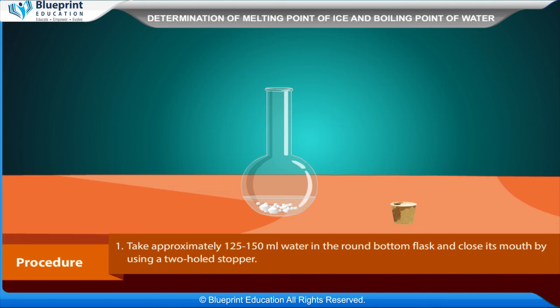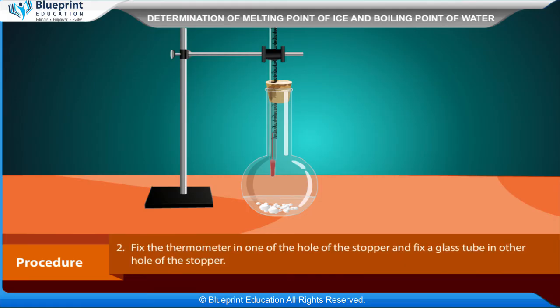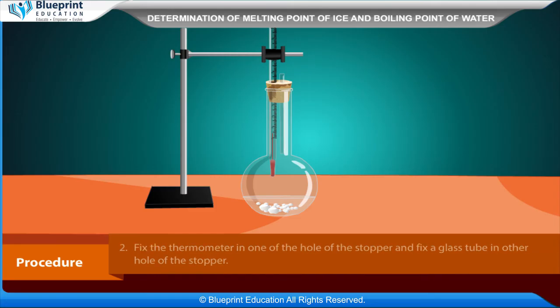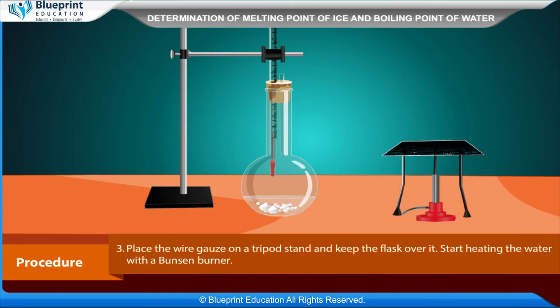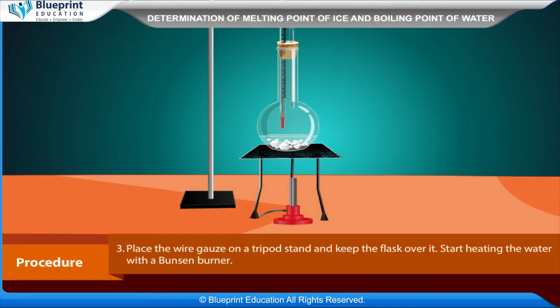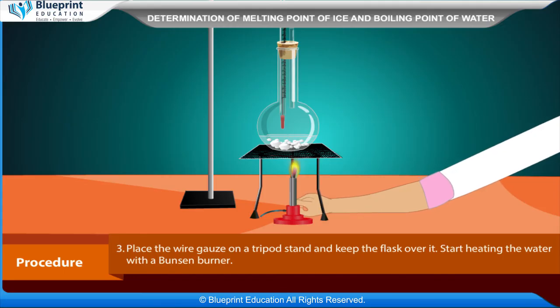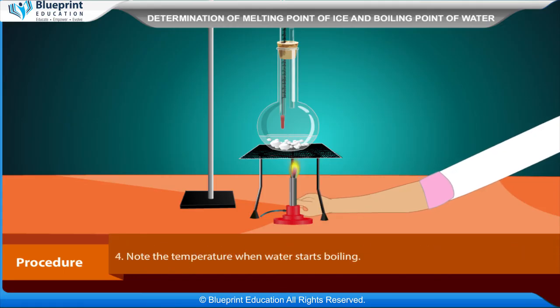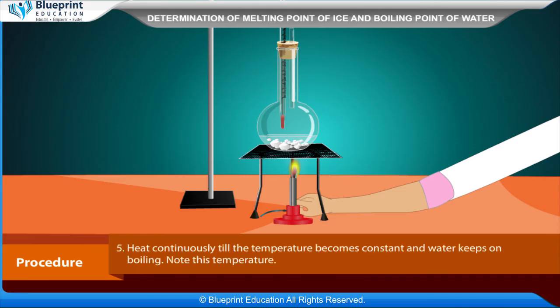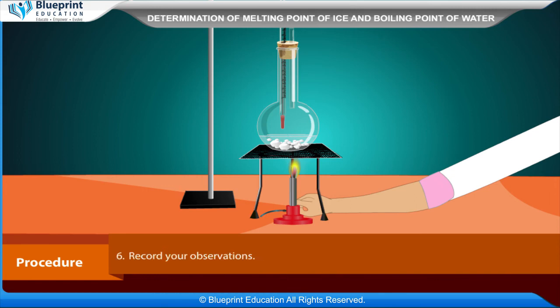Procedure: Take approximately 125 to 150 ml of water in the round-bottomed flask and close its mouth using a two-hole stopper. Fix a thermometer in one hole of the stopper and a glass tube in the other hole. Place the wire gauze on a tripod stand and keep the flask over it. Start heating the water with the Bunsen burner and note the temperature when water starts boiling. Heat continuously till the temperature becomes constant and water keeps on boiling; note this temperature.